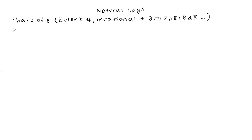So we use E to represent the number instead. These are specifically logs that have this base of E, and their other name is natural log. On your calculator and in your book, rather than writing log base E every time, we represent this with LN. You should look at your calculator and notice that LN button located right next to the log button — that's the one we'll be using in this section.